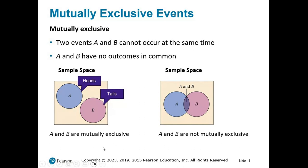There's no overlap because those two events cannot happen simultaneously. To the right, we have a diagram showing what not being mutually exclusive means — the two events have some possible overlap, an outcome that falls in both A and B. For example, event A is that a person is female and event B is that they are a math major. A person can be both female and a math major, so there's overlap — these are not mutually exclusive events.